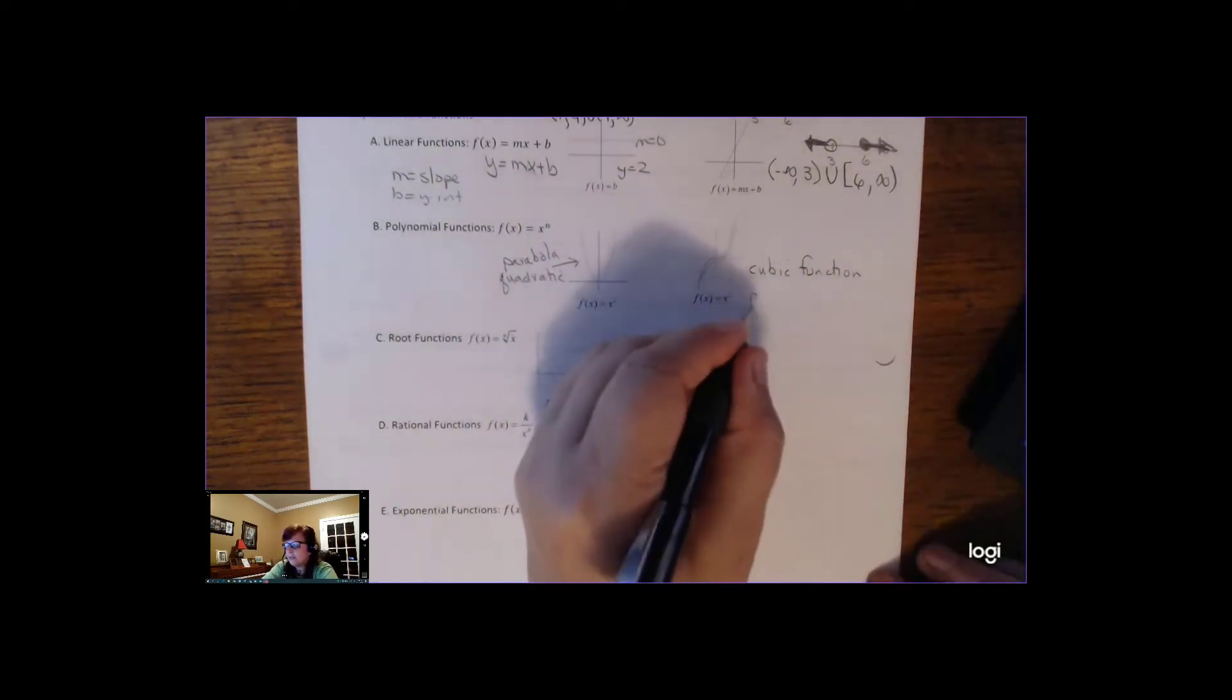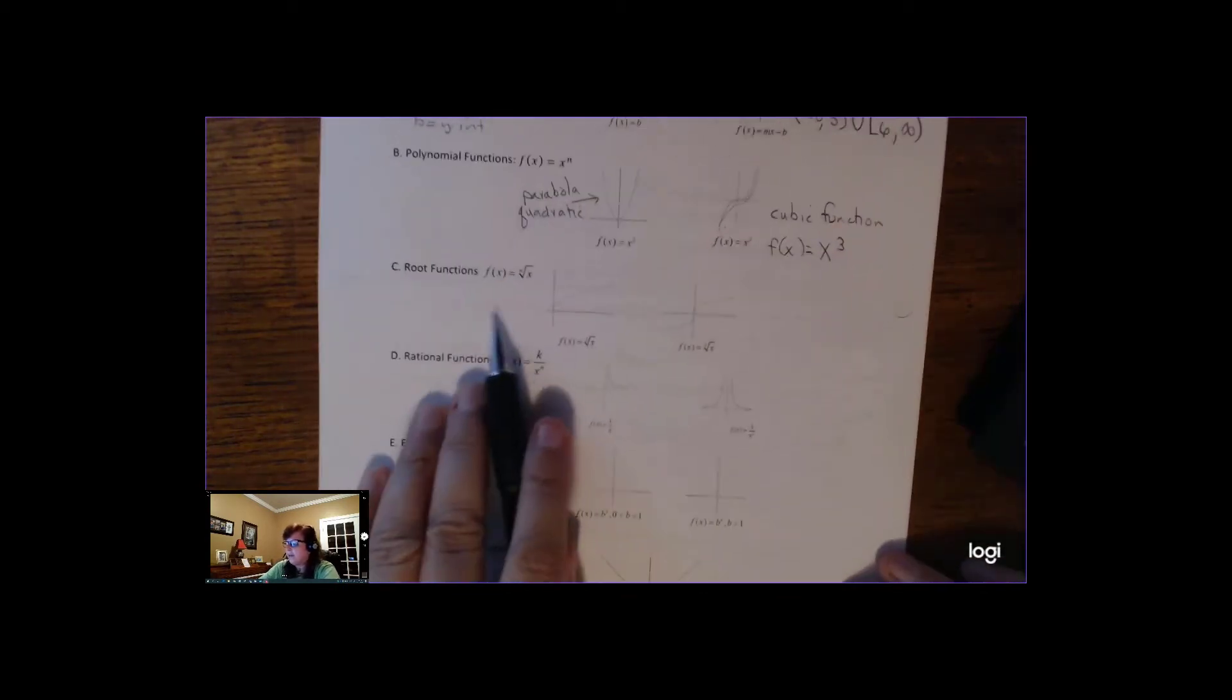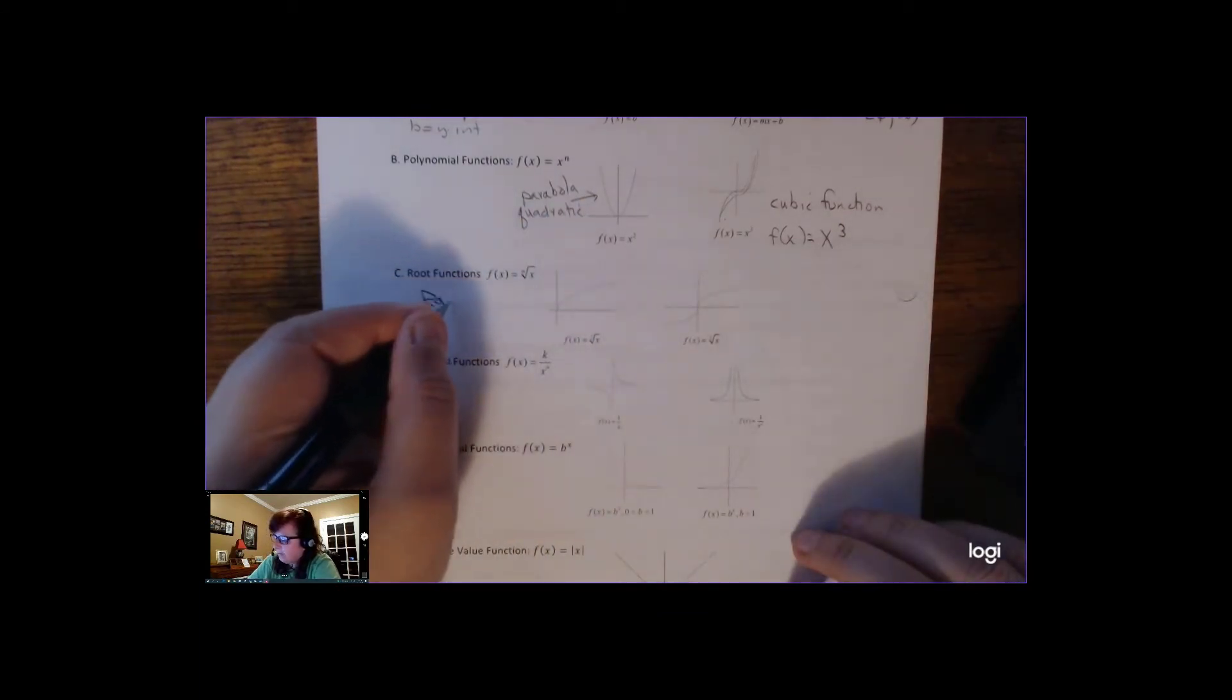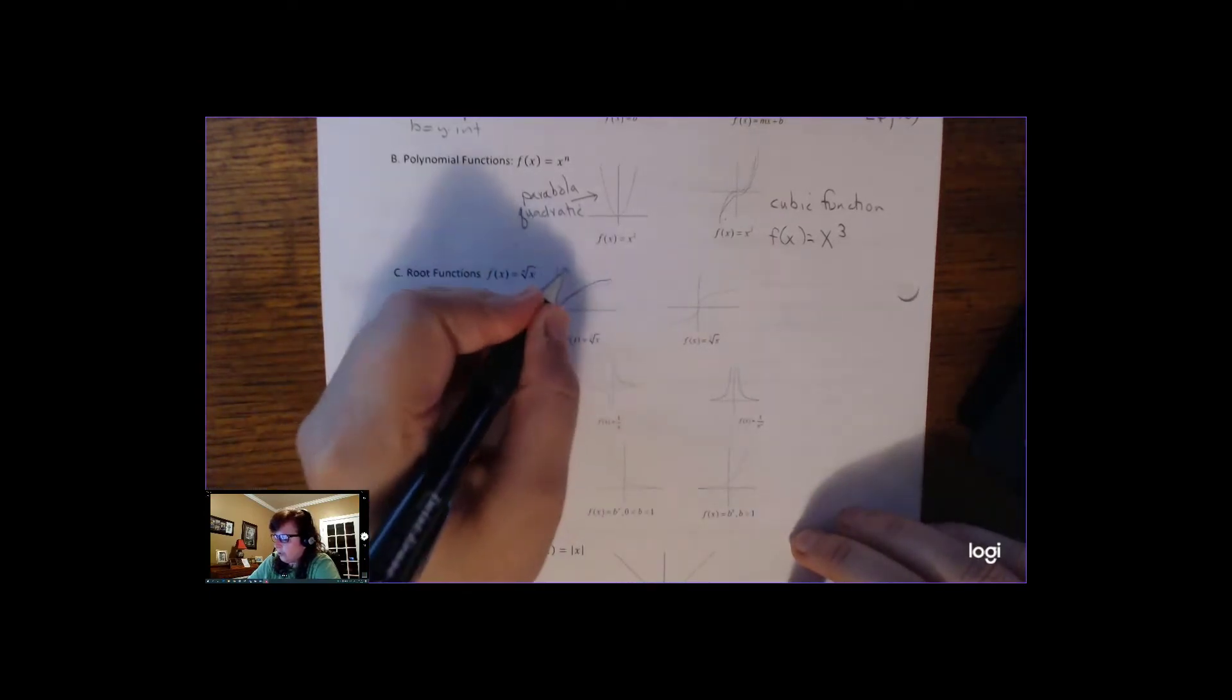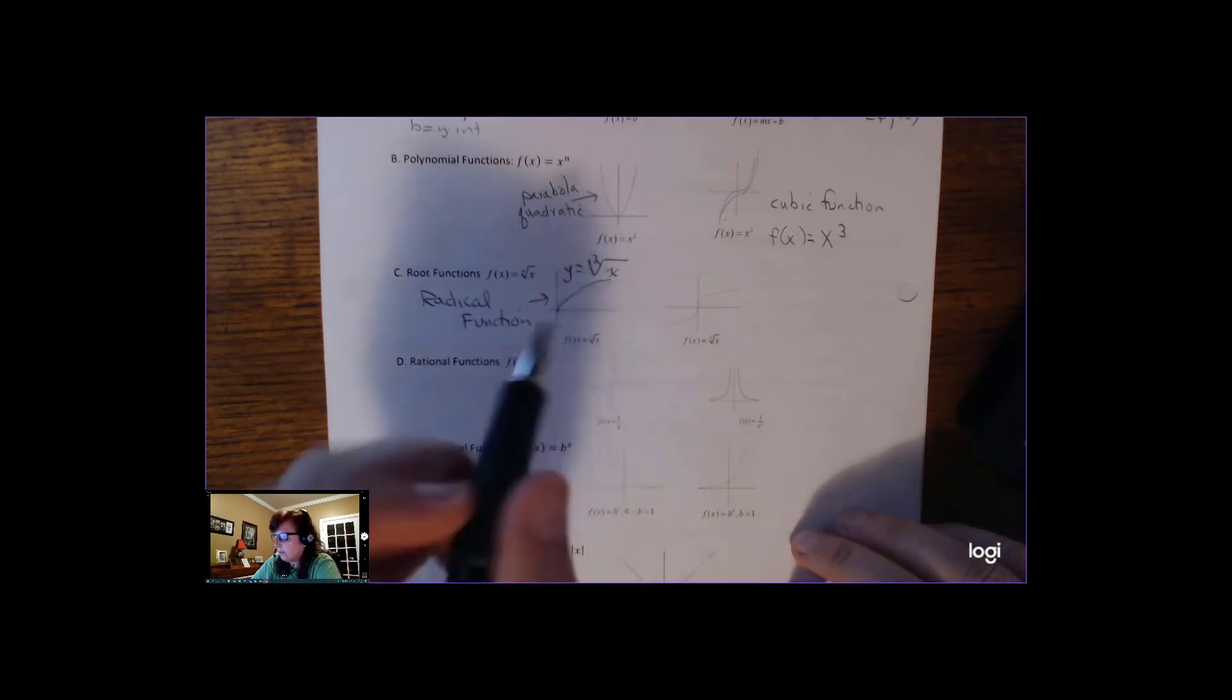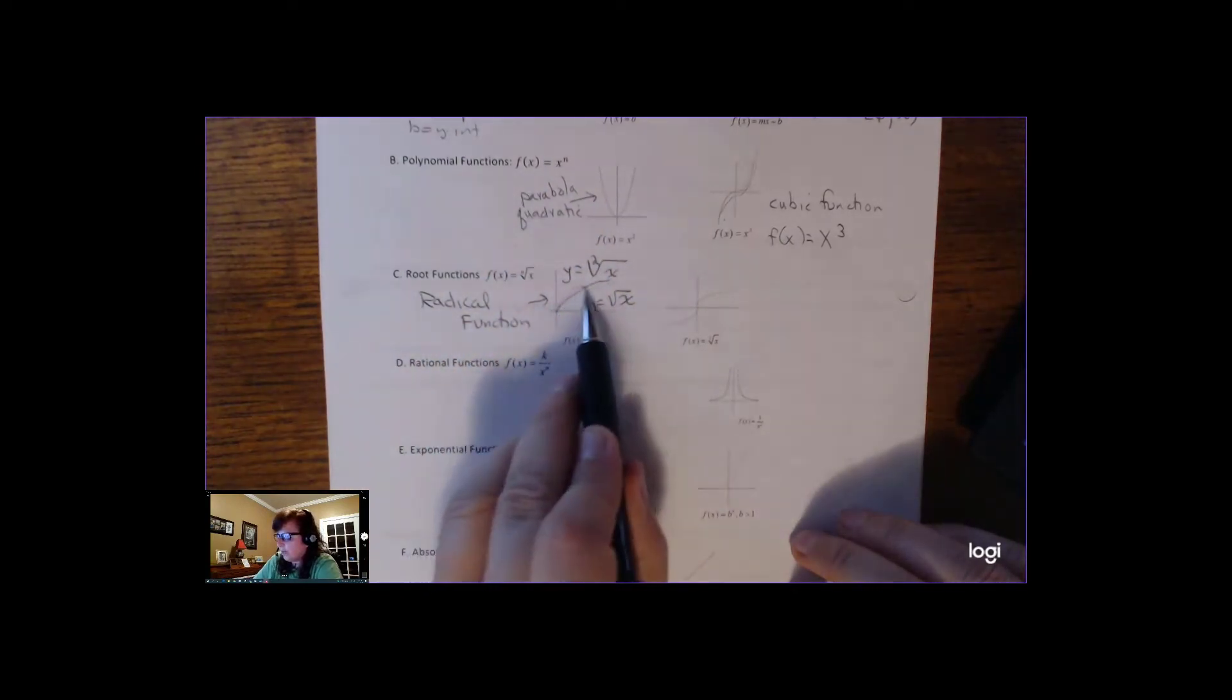It's hard to see. F of x equals x cubed is what's written. I've mentioned this one. I called that a radical function. That's a radical function where y equals the square root of x. So if you don't see a number here, it's understood to be a 2. So that's what radical functions that have a square root in it look like.